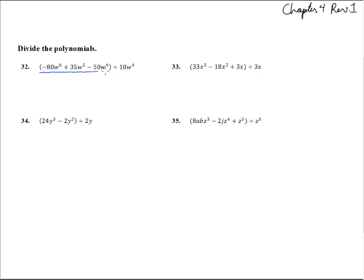We're going to divide this whole thing by 10w to the 4th. The first one divided by 10w to the 4th gives us negative 8, and w to the 6th over w to the 4th is w squared. The next one, 35 tenths, reduces down - we can take a 5 out of both and get 7 halves. W to the 5th over w to the 4th, we subtract exponents.